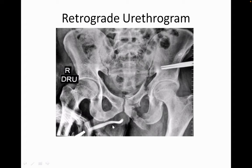What is gapometry? Gapometry gives a rough estimate of whether primary anastomosis can be done or if further mobilization is needed. It is the measure of the defect divided by the measurement of the bulbar urethra. If it is less than one-third or 0.35, primary anastomosis can be done. If it is more than one-third, inferior pubectomy or corporal rerouting may be needed as an extra procedure.